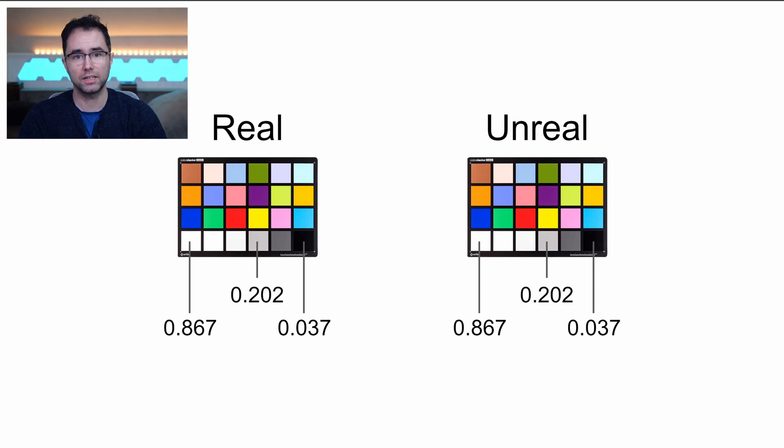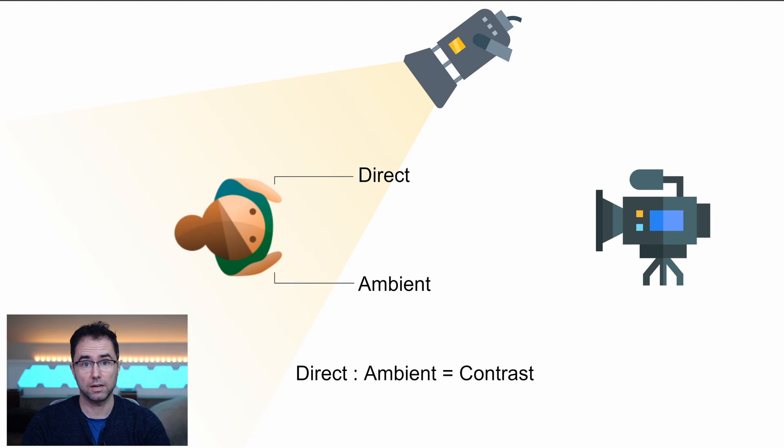We can still have other lighting problems. We want to match contrast. The lighting breaks down to a key light or a direct light, and the fill light or an ambient light. The difference between the intensities of the ambient light and our direct light is what we're going to call the contrast.